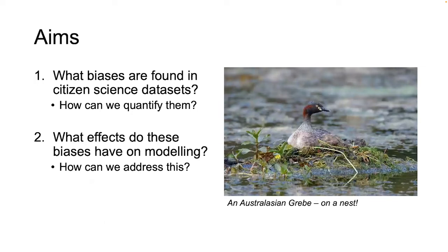In an attempt to arrive at the longer answer, I had two broad aims for my honours work. First, what are the biases found in citizen science datasets and how can we quantify them? And second, what effects do these biases have on modelling, and how do we address these effects when constructing models applied to citizen science data? Before we move into the more dense part of the seminar — there will be a fair amount of statistics involved, but don't worry, I've got plenty of bird pictures to distract you from the scary stuff.